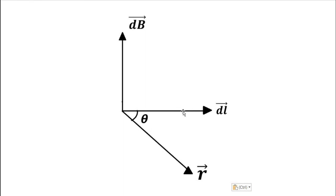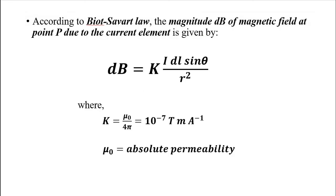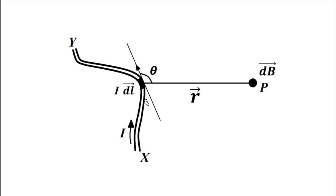This is Biot-Savart Law, which gives us the expression for the magnetic flux density in a current-carrying conductor. The whole principle involves splitting the entire wire into small current elements I·dl, then summing them together. Each current element contributes a small portion of the magnetic flux density dB vector, and the total magnetic flux density is the integration of dB — the summation of the effects of all such small current elements from X to Y.